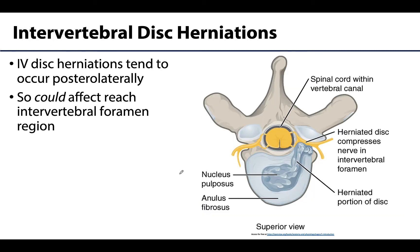Now, why we care about where the spinal nerves exit relates to intervertebral disc herniations. What will occur is that the nucleus pulposus will often herniate through the annulus fibrosus, and typically that herniation will occur posterolaterally — towards the posterior region and away from the midline. It could reach the intervertebral foramen region, directly affecting the spinal nerves there, or it could affect the spinal cord depending on how posterior and medially it goes. This is why we care: there could be compression of nerves in the intervertebral foramina.